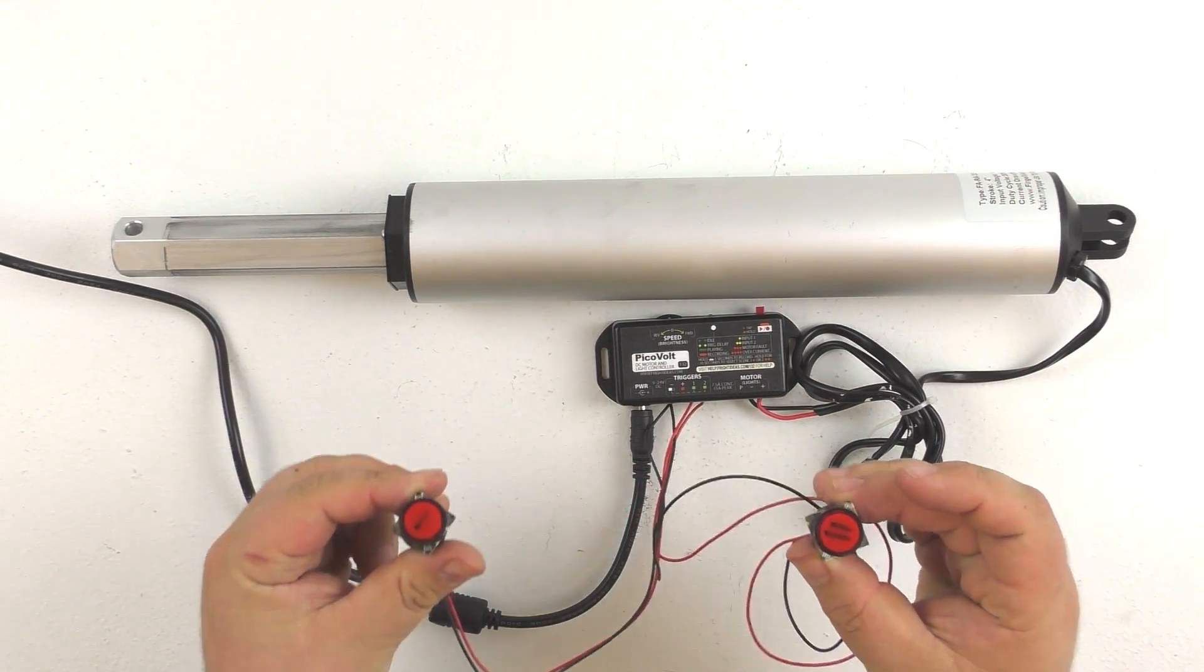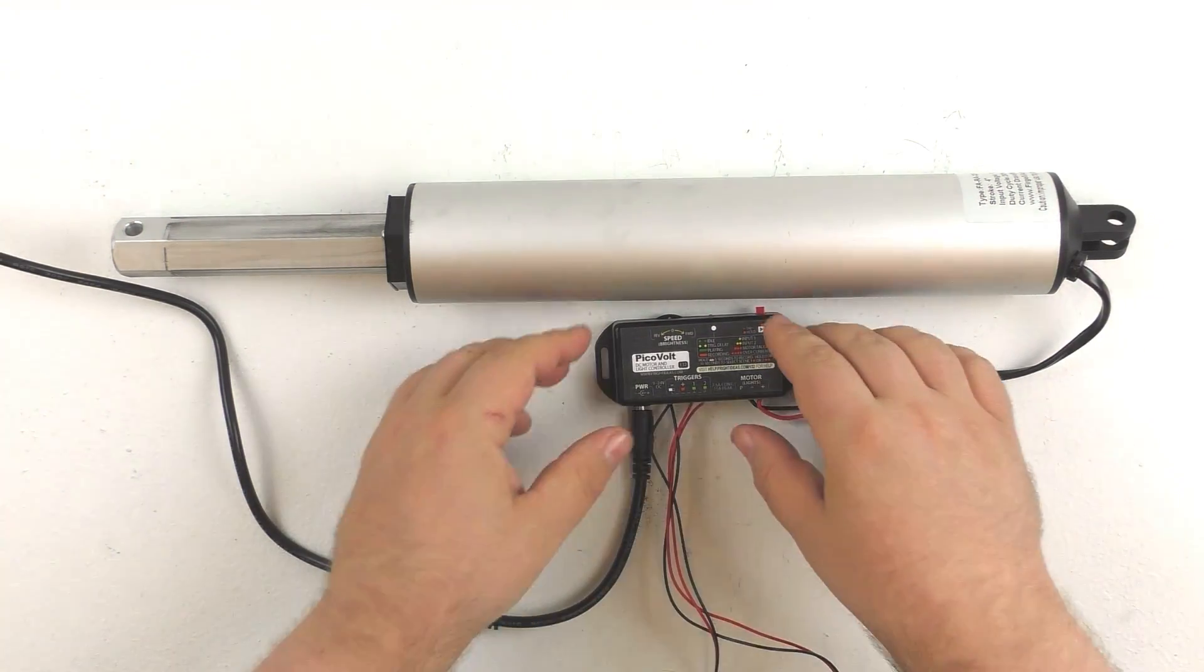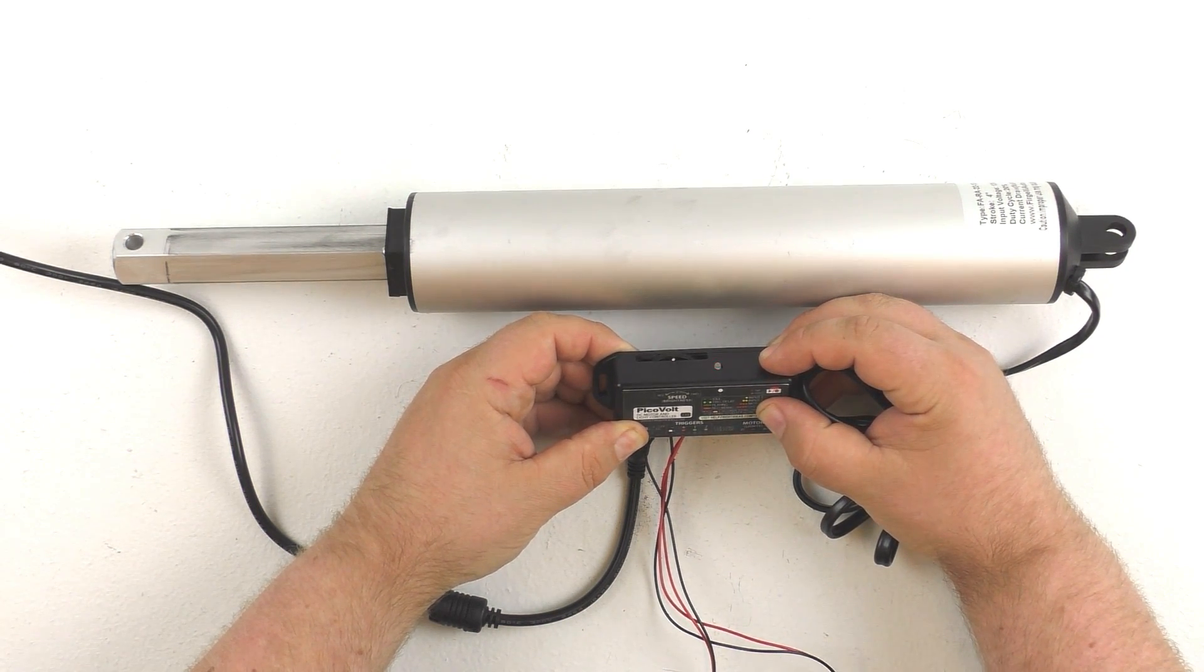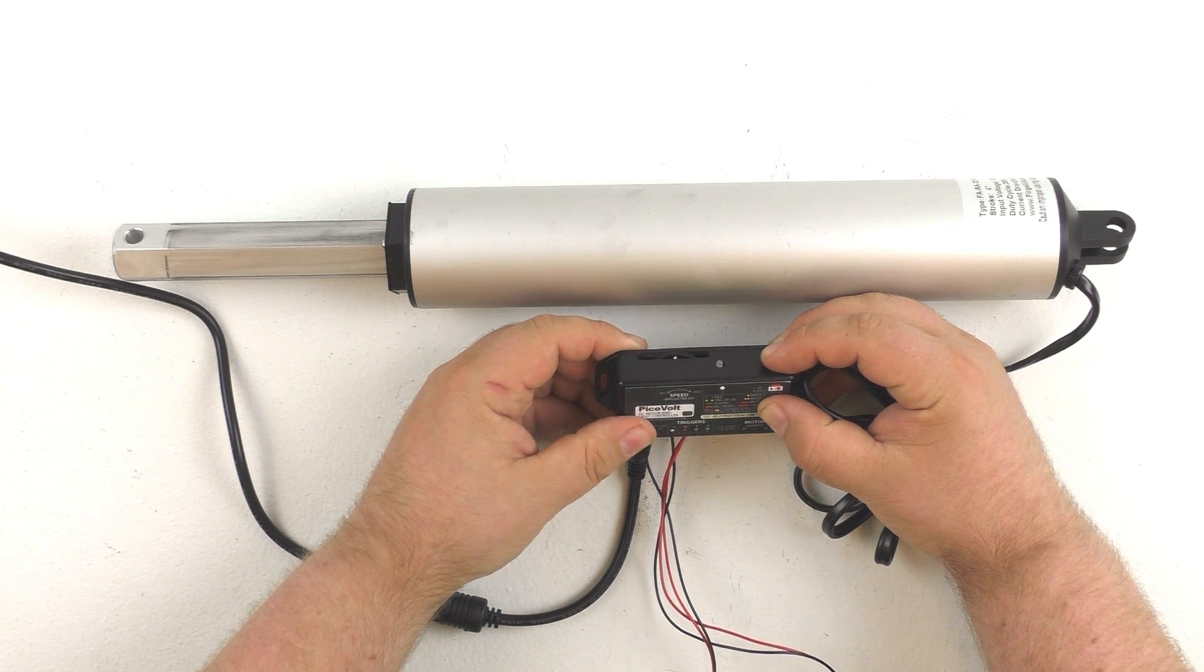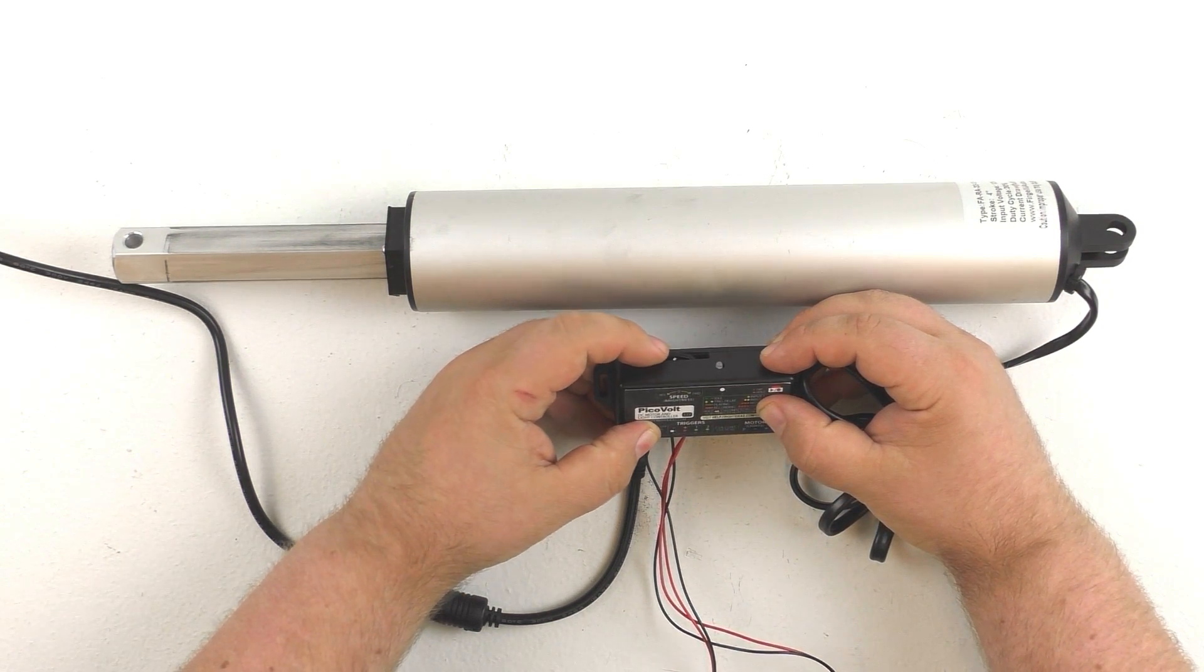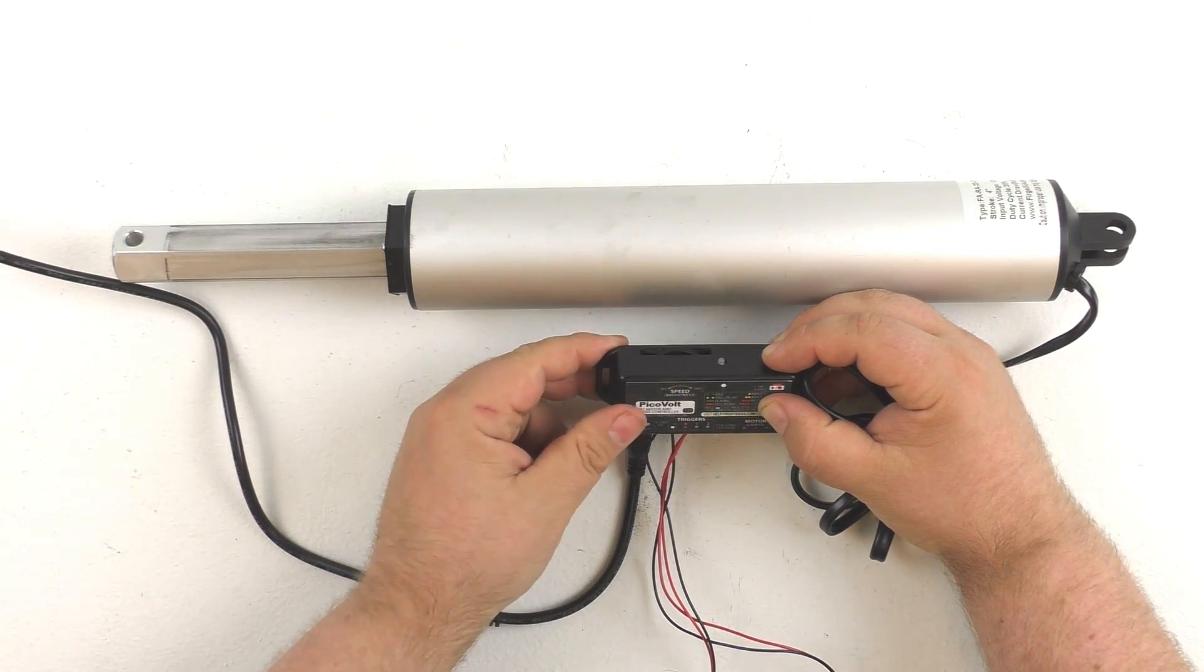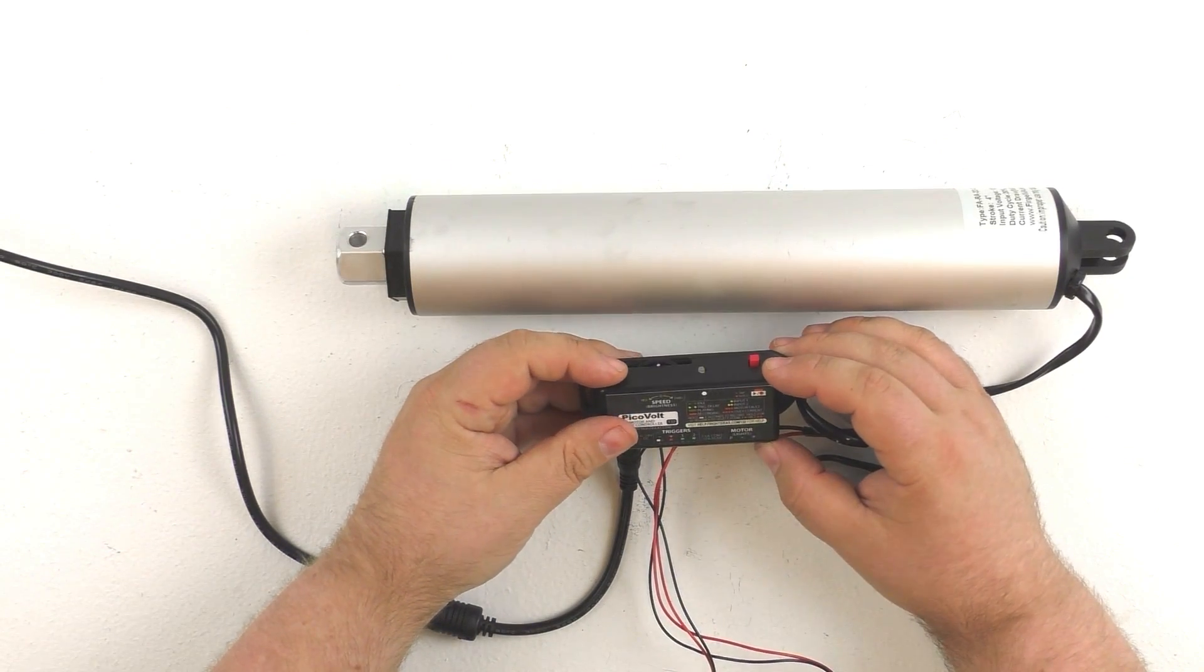So now we want to set up our number two button to retract the linear actuator. So we're just gonna go ahead and hold down the record button on the top of the actuator for ten seconds again so that we can get into the trigger or the input select option. Now that the LED is flashing we just make sure that the wheel is turned all the way to the right and then we can release the button and we're now programming for input two.